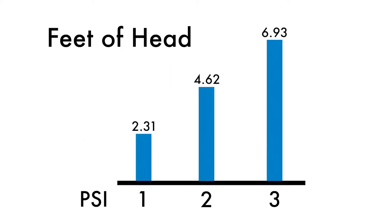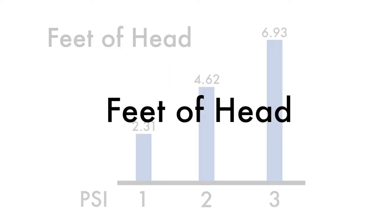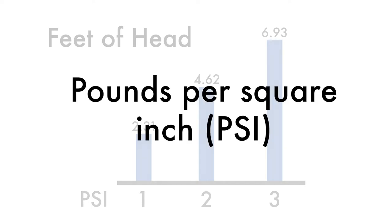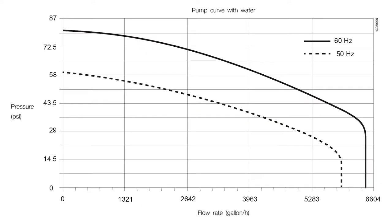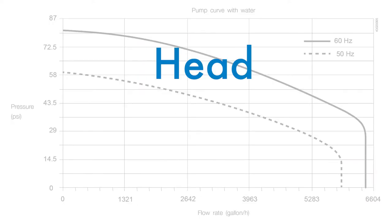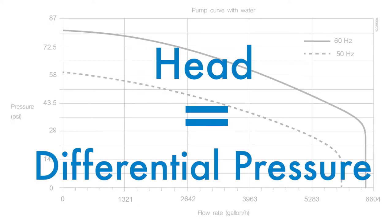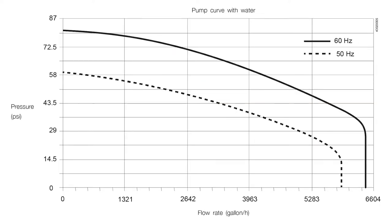Common units for indicating pressure are feet of head and pounds per square inch. By calculating head, we arrive at the differential pressure that a pump has to overcome in order to raise the water. We use that calculation to choose the right pump.